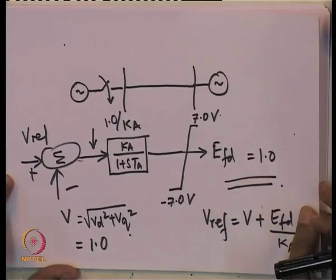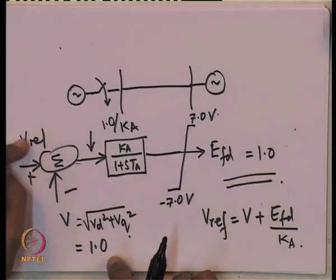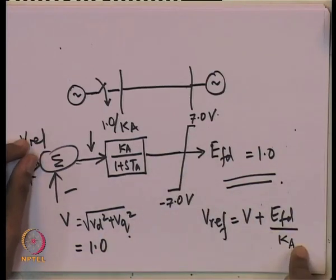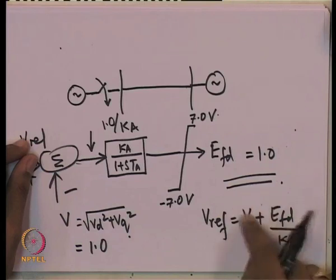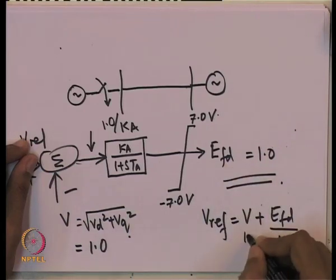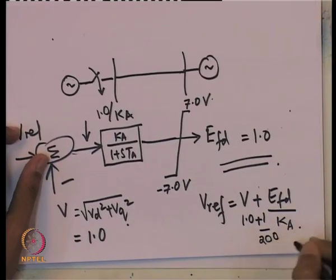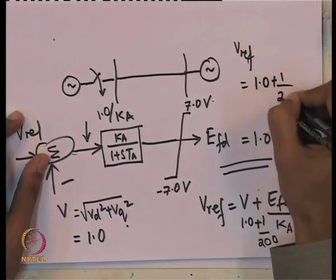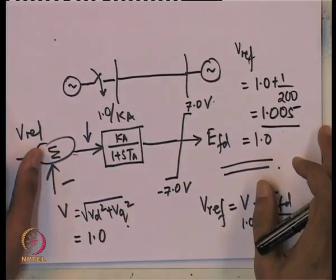Vref can be back-calculated: it is slightly greater than 1. If KA is 200, which is a typical gain in per unit per per unit, then Vref equals 1 plus 1/200, which equals 1.005. So Vref and V are almost the same provided KA is large, which is indeed the case. KA is normally quite large.